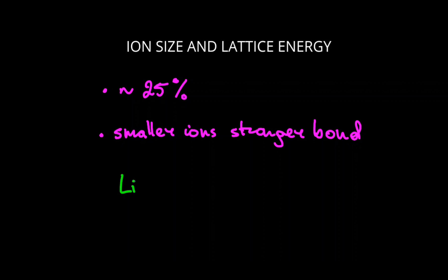For example, lithium fluoride has a stronger bond than potassium fluoride. Even though both are group 1 fluorides, lithium plus is smaller than potassium plus ion. So the bond will be stronger.